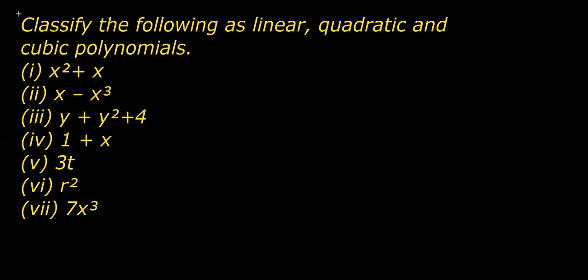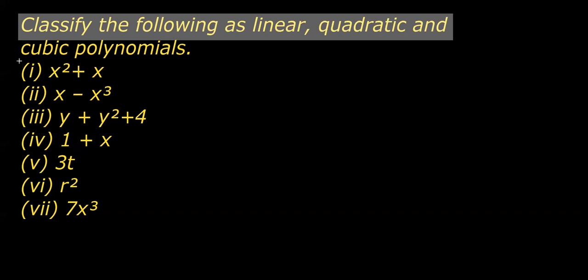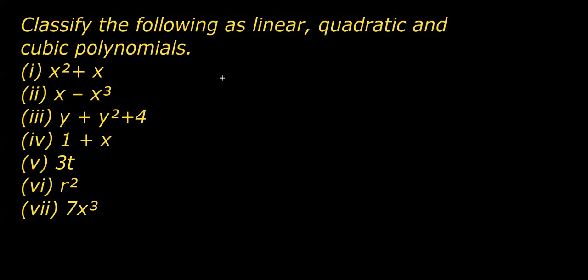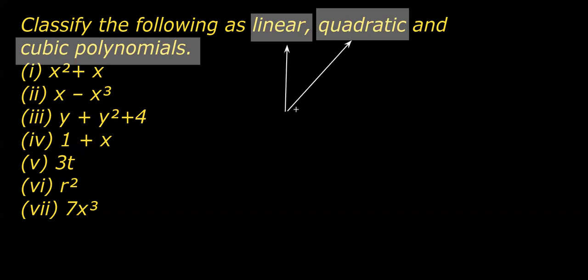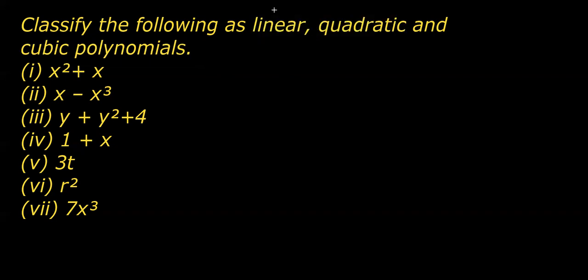In the next question we have to classify the polynomials given below as linear, quadratic, or cubic. You should know that a polynomial whose degree, that is the highest power, is one is called a linear polynomial. Having maximum power two is quadratic, and maximum power three is cubic.